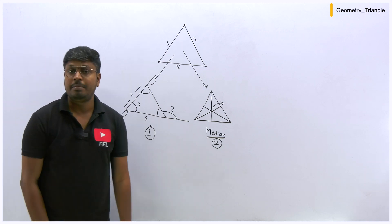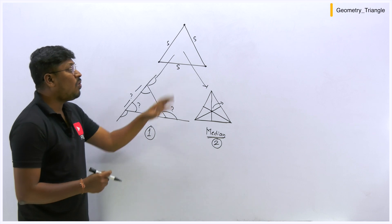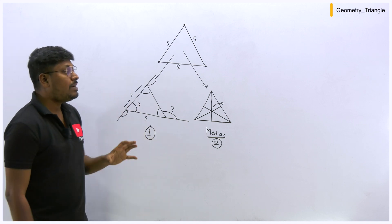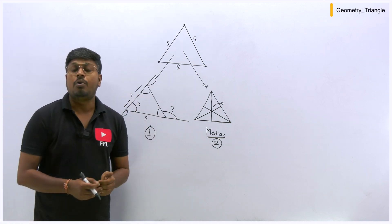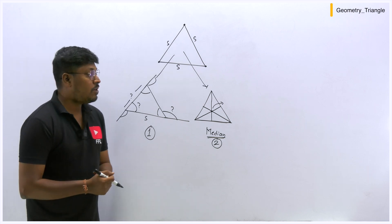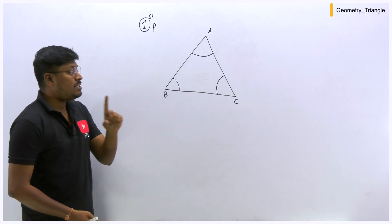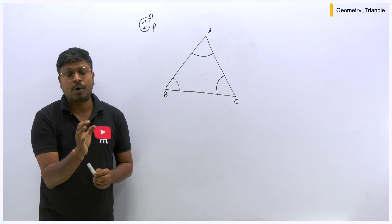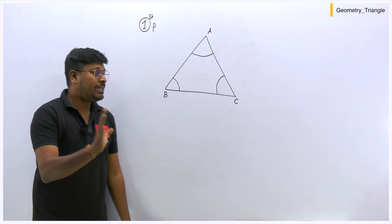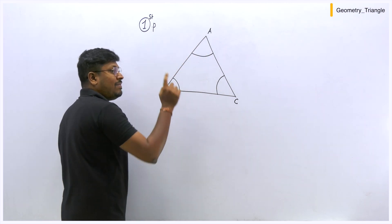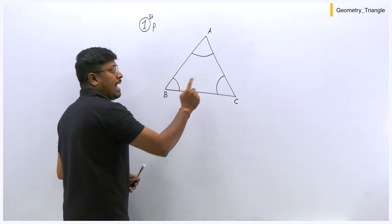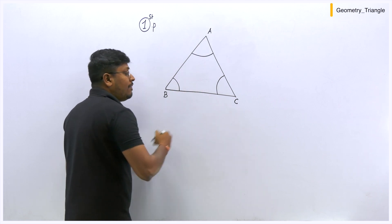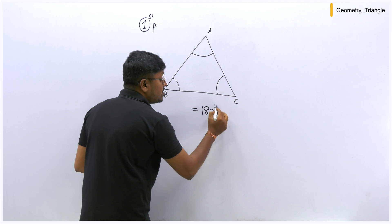In this video, I will teach you all the important properties — four or five properties — and in the next lesson I will solve questions based on triangle geometry. Now let's move on to the properties. The first major property of a triangle is: the sum of the three angles of a triangle equals 180 degrees. A triangle has three vertex points, and each vertex has an angle.